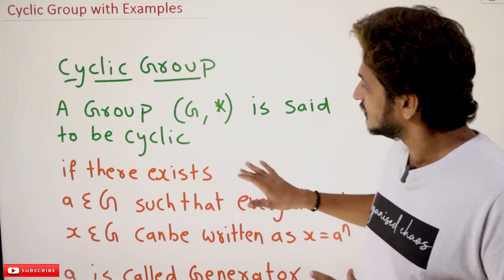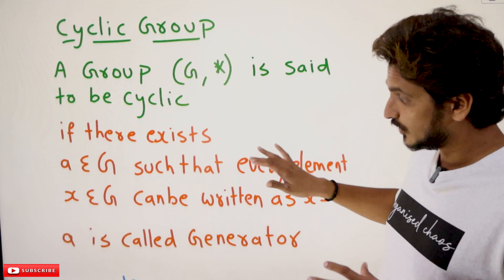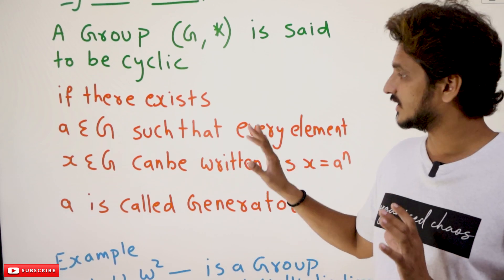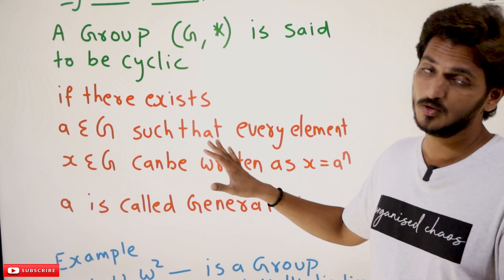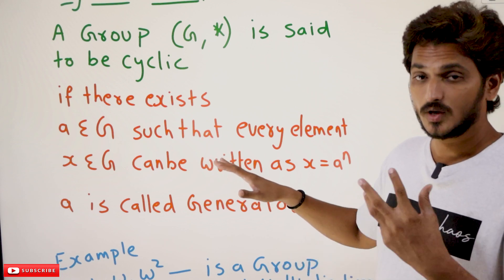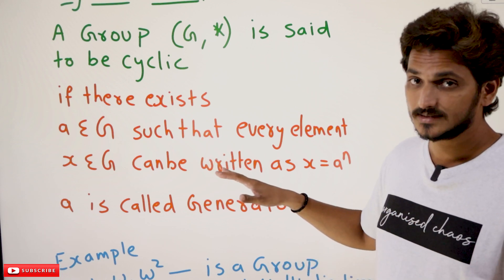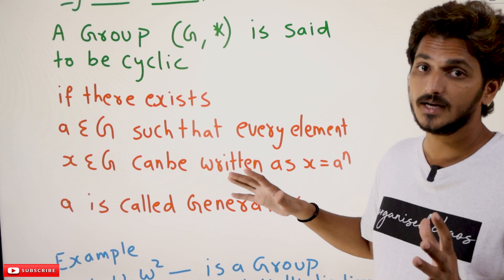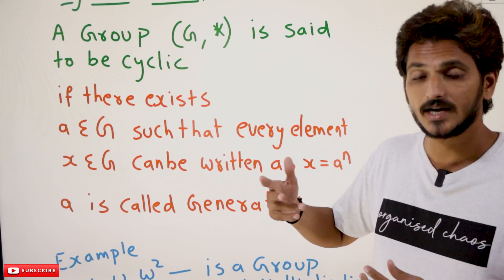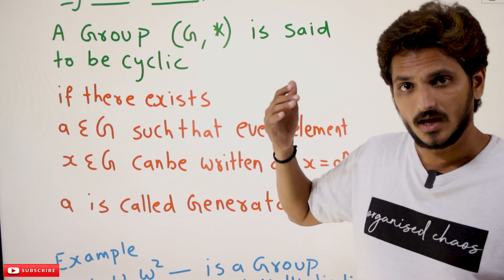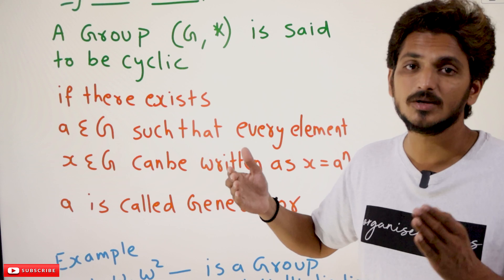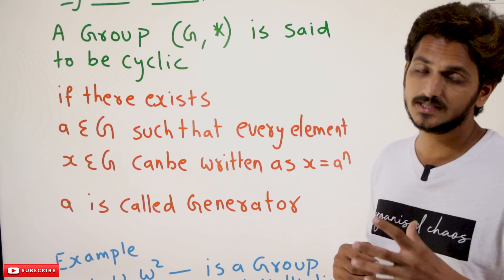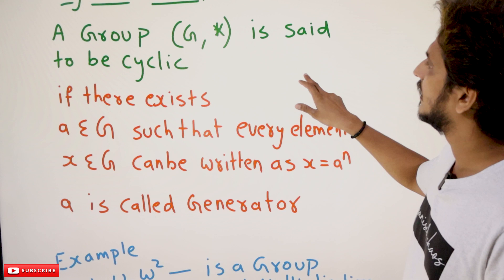Coming to today's class, first we are going to understand the definition, but it's very complex to understand the definition directly. With examples, you are going to get clarity, and we are doing multiple examples. The last example is very very important — it helps you a lot in understanding the next higher level concepts, cryptography and network security.